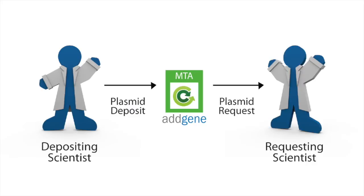Addgene requires an MTA for each order. A material transfer agreement, or MTA, is needed by many institutions before materials can be shared. MTAs might include terms like the intellectual property rights of a providing or receiving institution, their legal liability, and their use of the materials. Addgene uses the Uniform Biological Materials Transfer Agreement, or UBMTA, because it is a widely accepted MTA both in the U.S. and internationally.